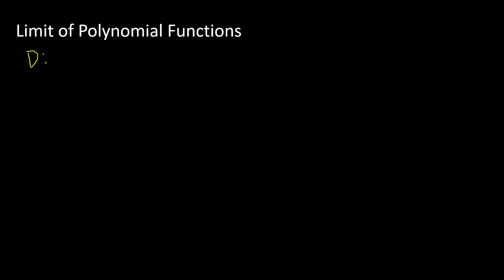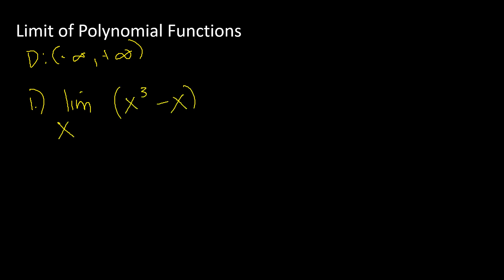The domain of a polynomial function is the set of all real numbers. This means that if you're going to get the limit of a polynomial function, you will just do direct substitution. For example, if you are going to find the limit of x³ minus x as x approaches 1, then substitute 1 for x. So we have 1³ minus 1, which equals 1 minus 1, and that is 0.